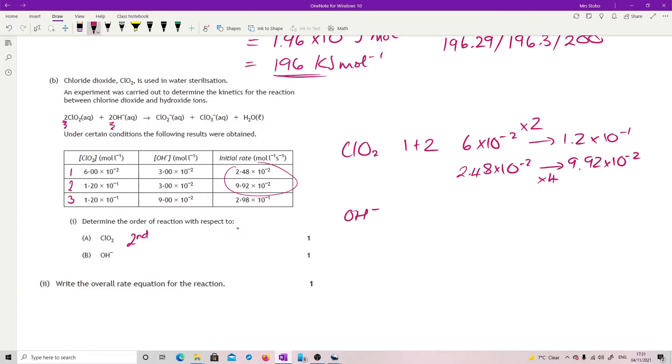For my OH-, I am going to look at reactions 2 and 3. Because again, my ClO2 is now staying the same, but my OH- is going from 3 times 10 to the minus 2 to 9 times 10 to the minus 2. So what I've actually got here is a triple. So look at my rate. Rate goes from 9.92 times 10 to the minus 2 to 2.98 times 10 to the minus 1. So this has also tripled. So this has got a direct first order link. Now, the reason I'm saying this is not particularly nice here is because that overall is giving you a third order reaction. And that's as bad as they go in terms of what you would be asked to work with.